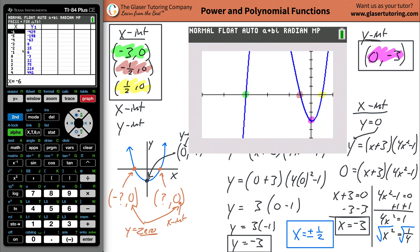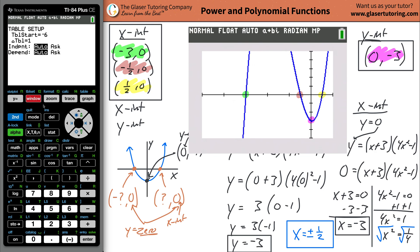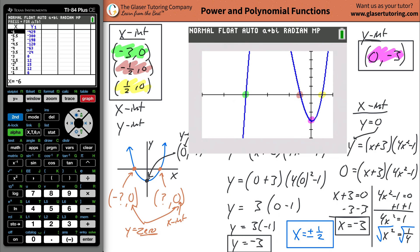So do second window. So that gives you to your table. Now you want to increment your table values by a half. So just do 0.5. Now hit second table.